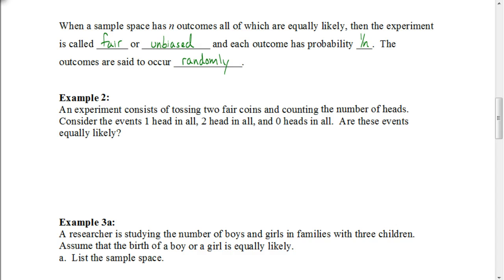When a sample space has N outcomes, all of which are equally likely, then the experiment is called a fair or unbiased experiment. If each outcome is equally likely to occur, it's a fair or unbiased experiment. Flipping a coin is an easy example — there's only one head and one tail, so the probability of heads and tails are the same. Each outcome has a probability of one over N. For a spinner divided into six equal sections, each one would have a one in six probability. The outcomes occur randomly with no particular pattern.